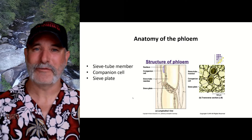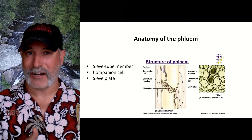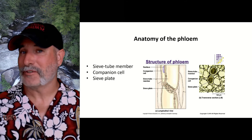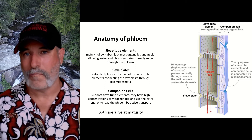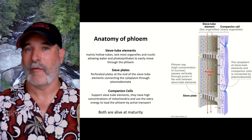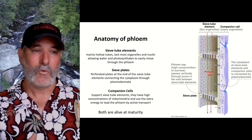Here's the anatomy of a phloem. We have a sieve tube member, a companion cell, and a sieve tube plate. The sieve tube member and the companion cells are alive at maturity, unlike the xylem, which is dead. Even though the sieve tube element is mostly a hollow tube to transport stuff, it's still alive — but it lacks most organelles and nuclei. It's just a tube to allow stuff to move up and down, with perforated plates between elements to allow things to move through.